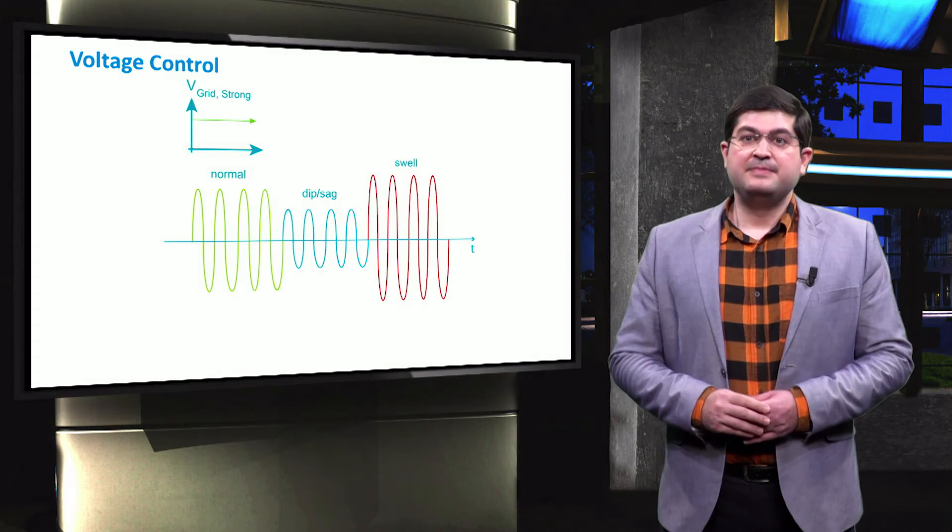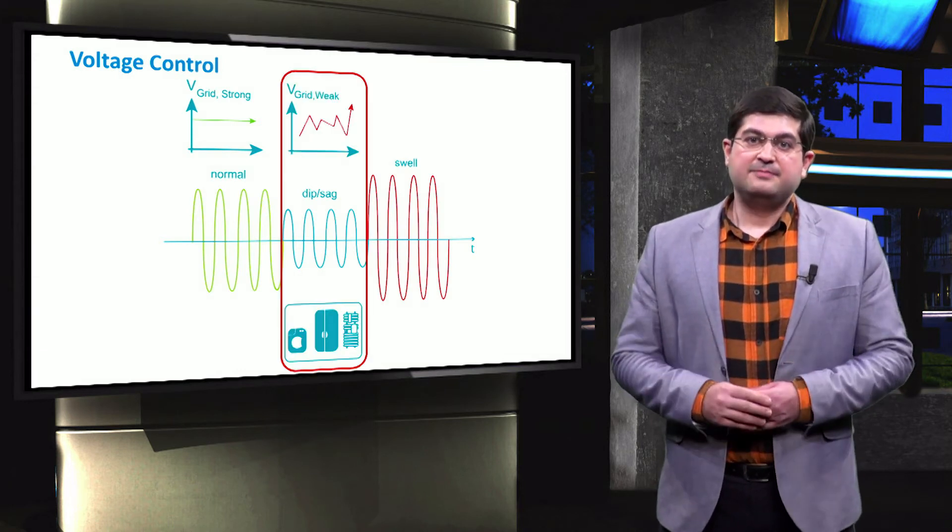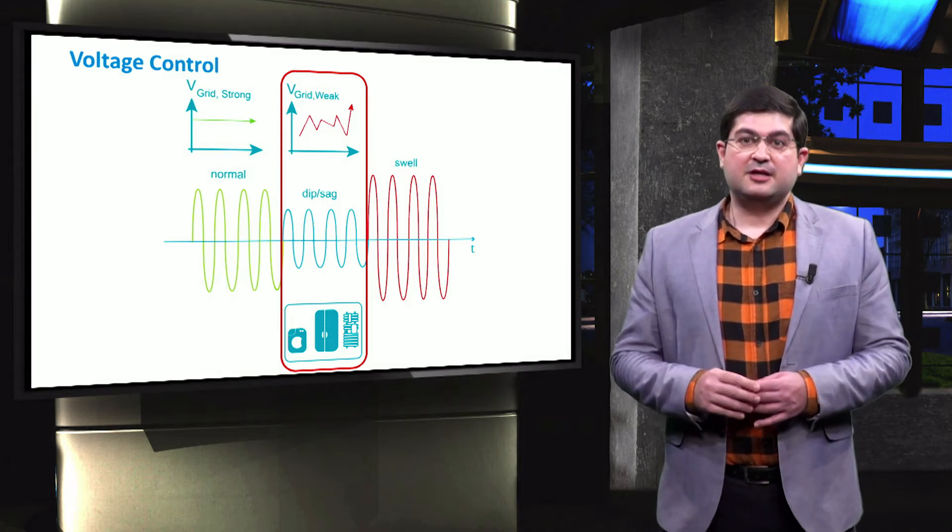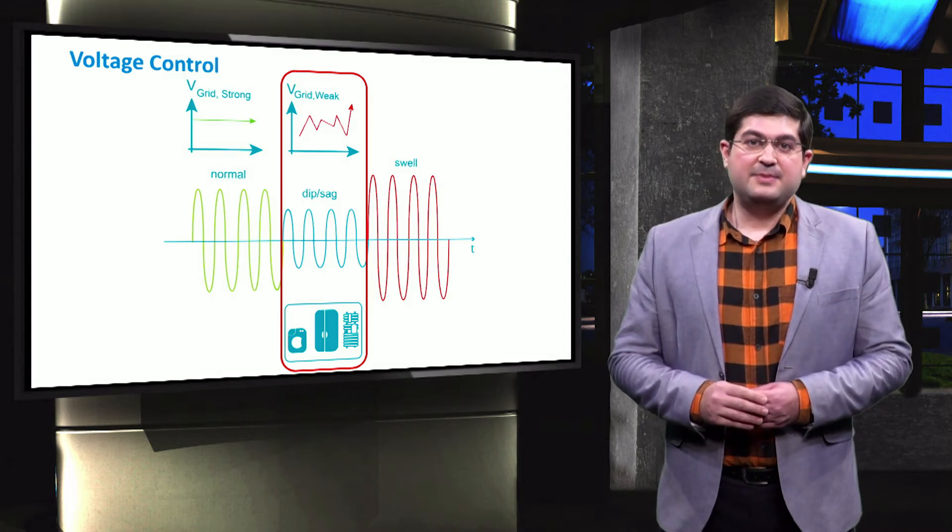If the grid is strong, then it dominantly controls the voltage. However, if the grid is weak, then the voltage might not be adequately controlled and kept within allowed limits in a microgrid.